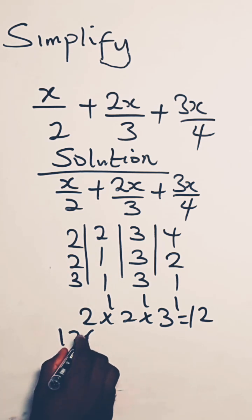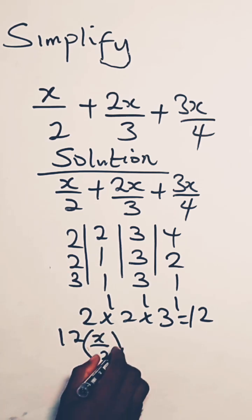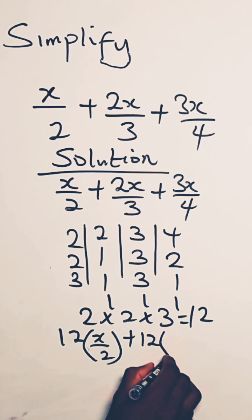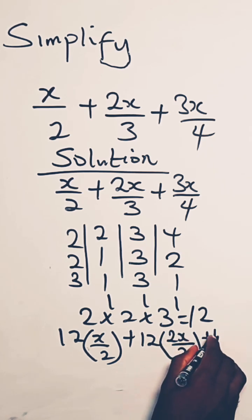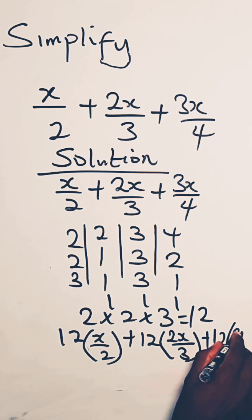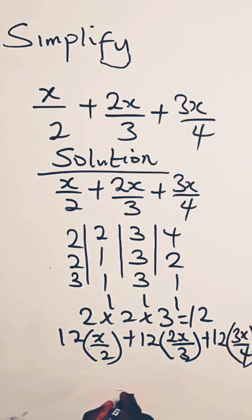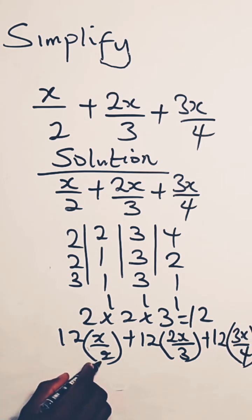So we have 12 times x over 2 plus 12 times 2x over 3 plus 12 times 3x over 4. So we simplify. 2 here is 1, 2 in 12 is 6. 6 times x, we have 6x.